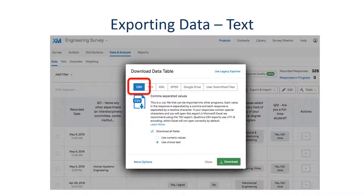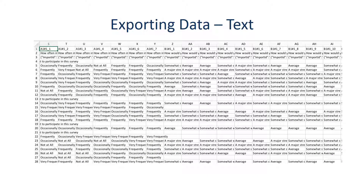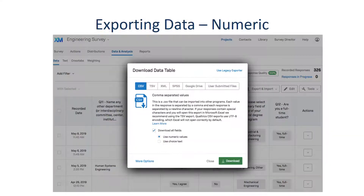You will need to notice that there are two options: Use Numeric Values and Use Choice Text. Let's try with the default, which is Choice Text, and click Download. Once the file is downloaded, open it. As you can see, the first row contains variable names or question numbers. The next two lines are descriptions of the questions. After that, each row contains one observation — people's responses for each question. But what we need is statistical analysis, and this requires the data to be numeric.